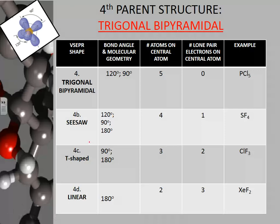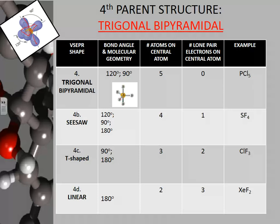Now we're getting into our new structures — the expanded octets. The parent structure is trigonal bipyramidal. I talked about a ballerina: this being her waist, this is her head, and this is her feet, and this is her triangular skirt around the equatorial region. If it's trigonal bipyramidal, you're going to have two sets of bond angles: 120-degree bond angles and 90-degree bond angles. This happens when you have five atoms on the central atom and no lone pairs. The equatorial region forms the triangle tutu.